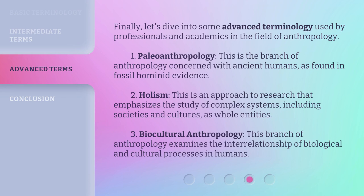Finally, let's dive into some advanced terminology used by professionals and academics in the field of anthropology. 1. Paleoanthropology: This is the branch of anthropology concerned with ancient humans, as found in fossil hominid evidence. 2. Holism: This is an approach to research that emphasizes the study of complex systems, including societies and cultures, as whole entities. 3. Biocultural Anthropology: This branch examines the interrelationship of biological and cultural processes in humans.